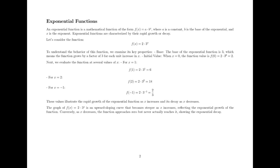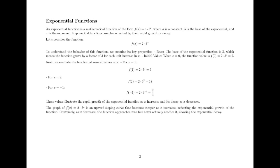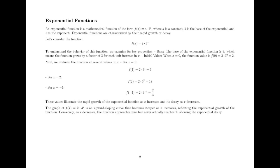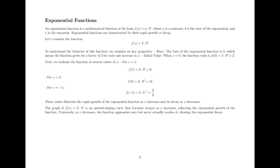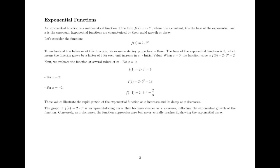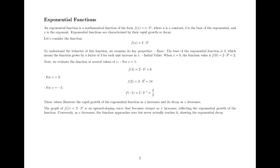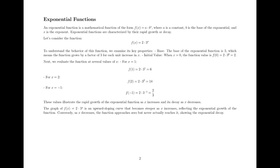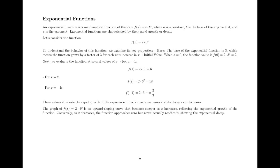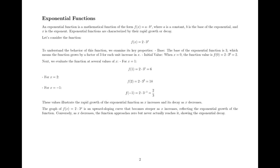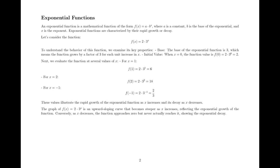Let's consider the function f(x) = 2 · 3ˣ. To understand the behavior of this function, we examine its key properties. The base of the exponential function is 3, which means the function grows by a factor of 3 for each unit increase in x. The initial value, when x = 0, is f(0) = 2 · 3⁰, which is 2.